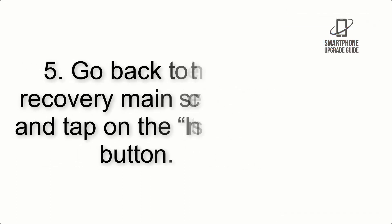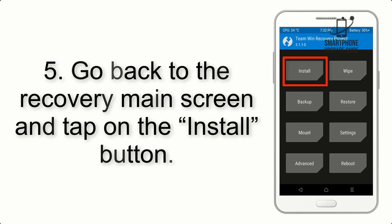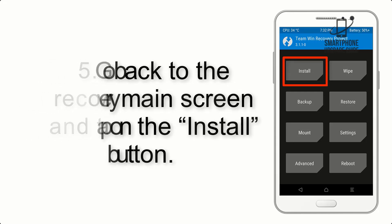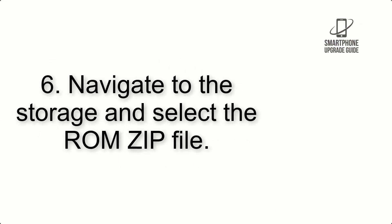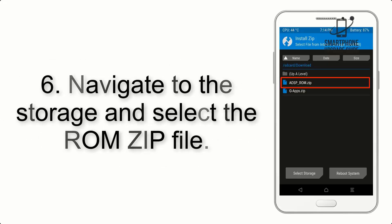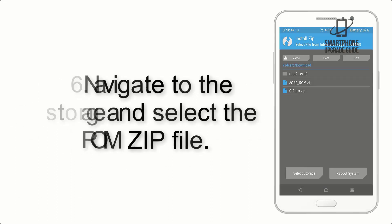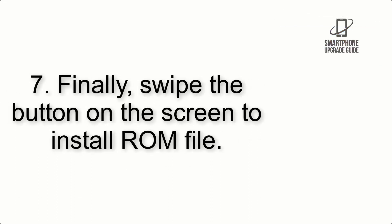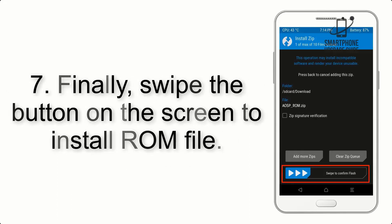Step 5: Go back to the recovery main screen and tap on the Install button. Step 6: Navigate to the storage and select the ROM zip file. Step 7: Finally, swipe the button on the screen to install the ROM.